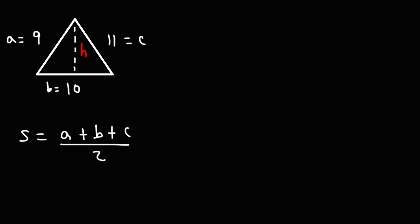Now once we calculate the value of S, we can then plug it into this formula to get the area of the triangle. So the area is going to be the square root of S times S minus A times S minus B times S minus C.